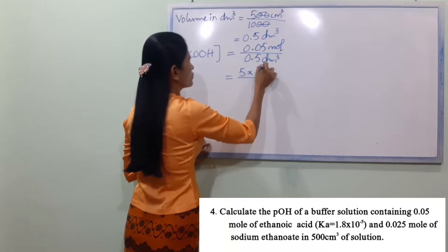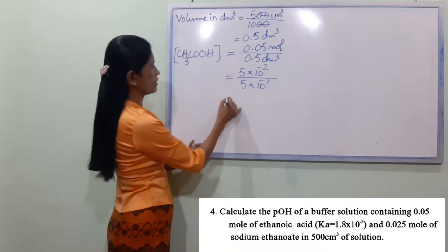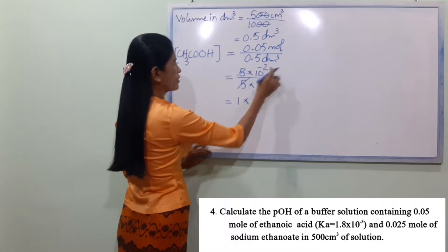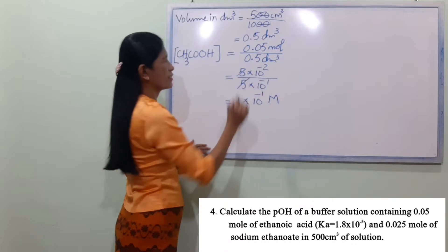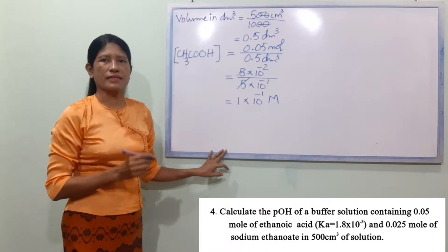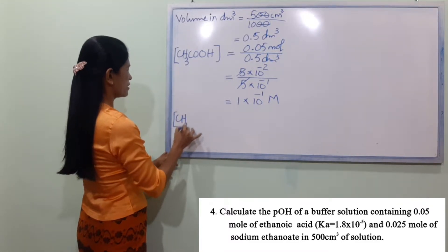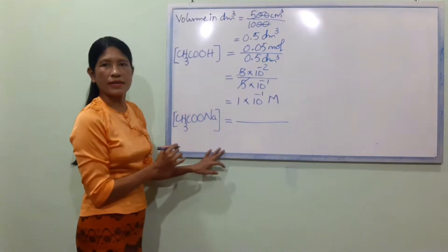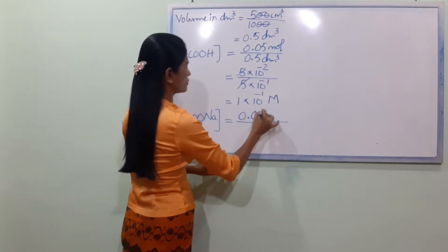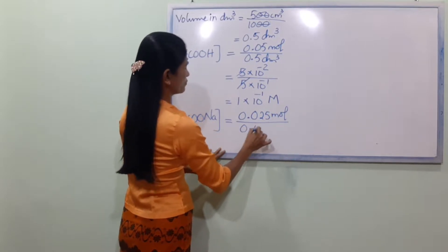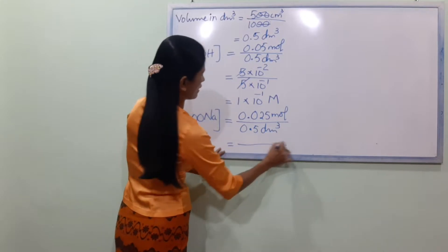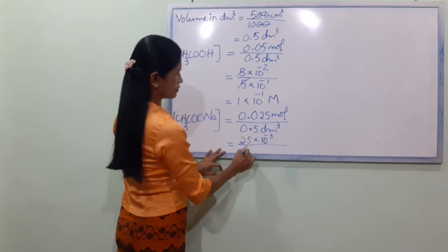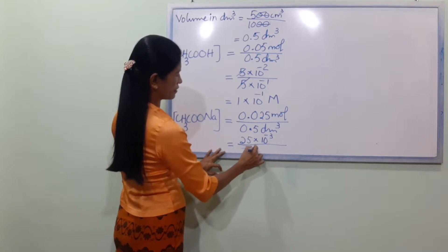That gives us 5 × 10 power minus 2 mol per dm³, which equals 1 × 10 power minus 1. Now the concentration of CH₃COO⁻ equals 0.025 mol divided by 0.5 dm³, giving 5 × 10 power minus 2 mol per dm³.